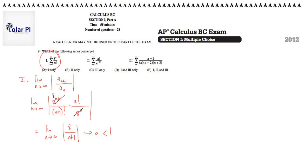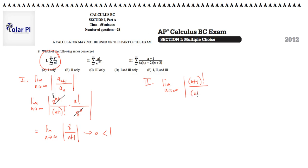Because part two also lends itself to be checked easily by the ratio test, we're going to use the ratio test there. The ratio test applied there would say limit as n goes to infinity of n plus 1 factorial over n plus 1 to the 100, and then times the reciprocal of the nth term — n to the 100 over n factorial.